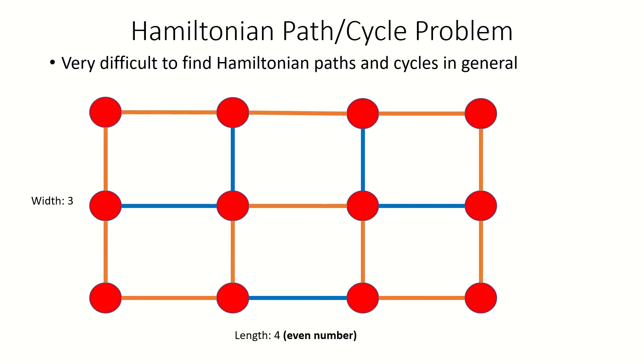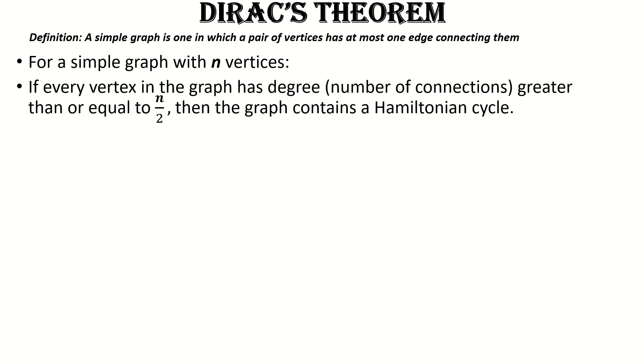There also exists sufficient conditions for graphs of any kind to have Hamiltonian cycles or paths. Here are two of those sufficient conditions. The first is Dirac's theorem, which states that if we have a simple graph with n vertices, where every vertex has degree greater than or equal to n over 2, then the graph contains a Hamiltonian cycle.